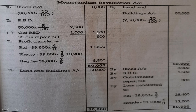Now we reverse these entries for the memorandum revaluation account. Debit land and building account Rs. 50,000. Credit stock account Rs. 8,000, reserve for bad debts Rs. 1,500, and outstanding repair bill Rs. 900. The difference is again Rs. 39,600, but now distributed among the remaining partners Rai and Egde in their new ratio — Rai gets 39,600 × 2/3 = Rs. 26,400 and Egde gets 39,600 × 1/3 = Rs. 13,200.